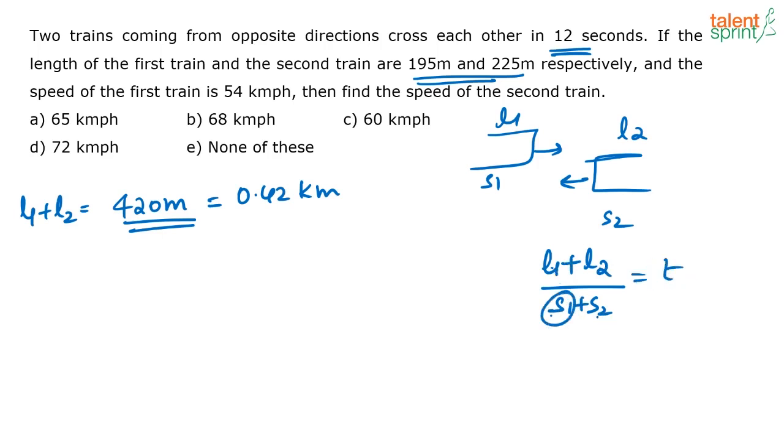So you have to find S1 - everything else is given here. So you can say that 0.42 divided by 54 plus the speed of the other train. S1, let that be S1. That is equal to time taken - they are saying it as 12 seconds.